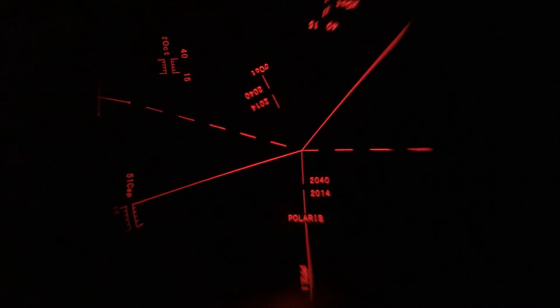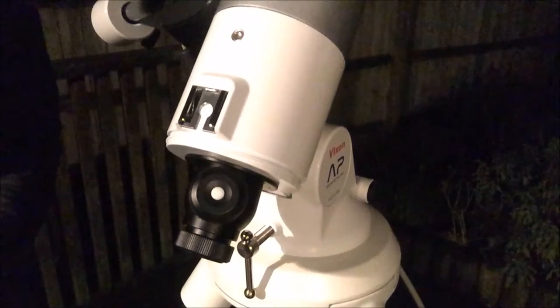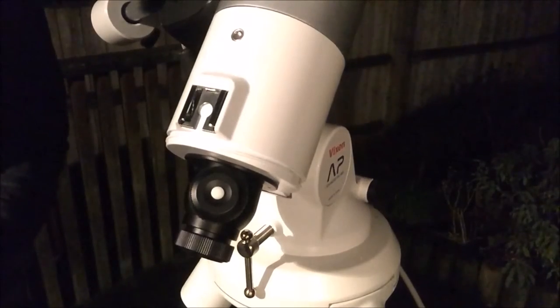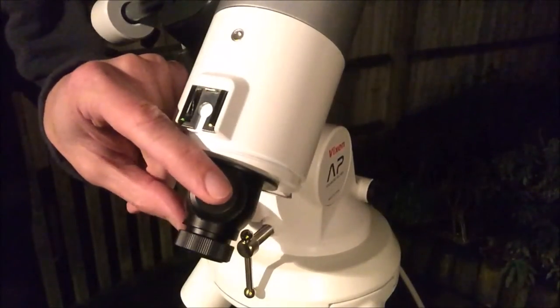There are also markings on here to use stars in the southern hemisphere. Okay, so what about the Polar Scope controls? To turn on the reticule, you press this white button.